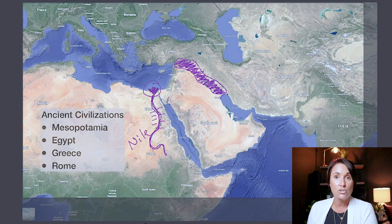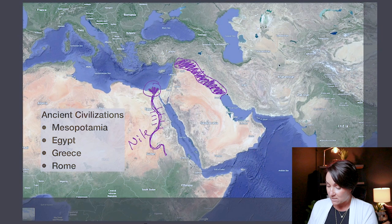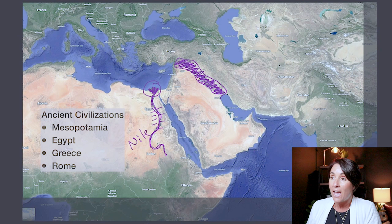Egypt and Mesopotamia both contributed to our current civilization in the form of irrigation. These people way back in the day learned how to irrigate crops using freshwater from the Nile and other rivers that flowed through these areas. That was the start of irrigation — so remember that when thinking about ancient civilizations.